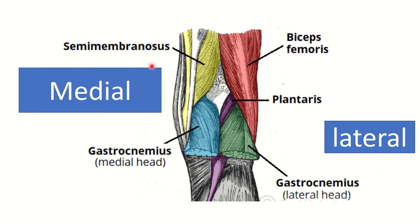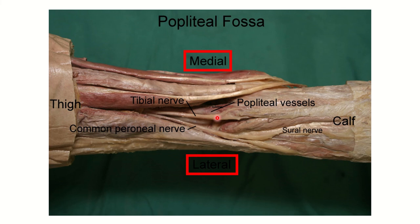Here we can see the medial side and the lateral side. On the medial side, the boundary is formed by semimembranosus muscle in the upper part and the medial head of gastrocnemius in the lower part. On the lateral side, in the upper part we have biceps femoris, and also plantaris, and in the lower part the lateral head of gastrocnemius. So medially: semimembranosus and gastrocnemius; laterally: biceps femoris, plantaris, and lateral head of gastrocnemius.